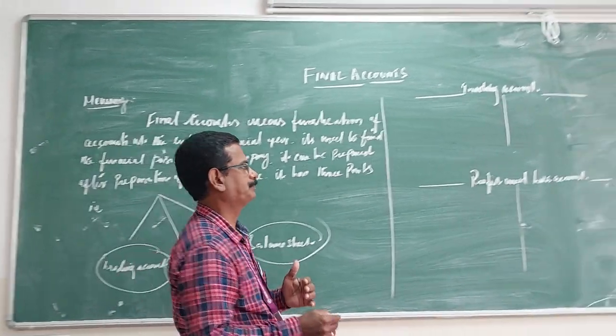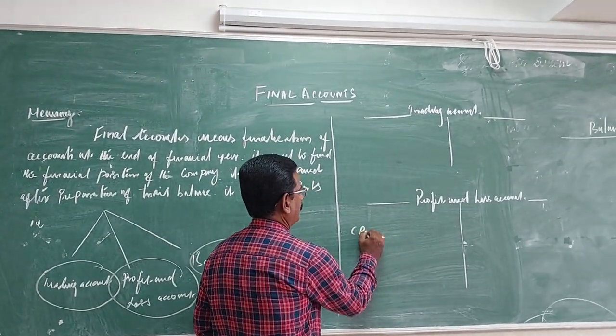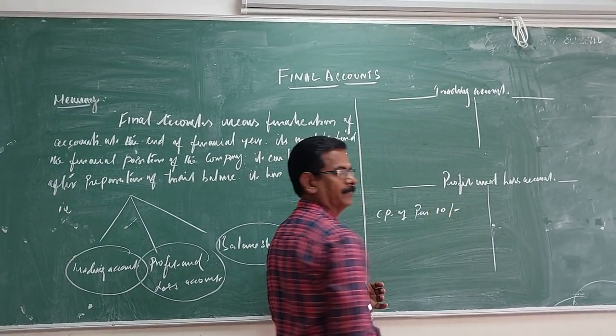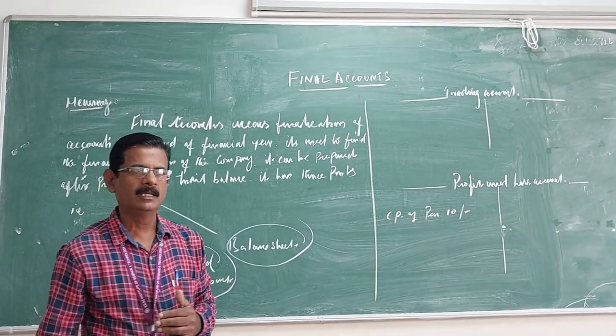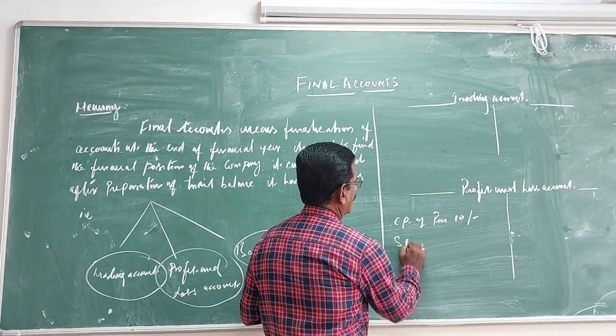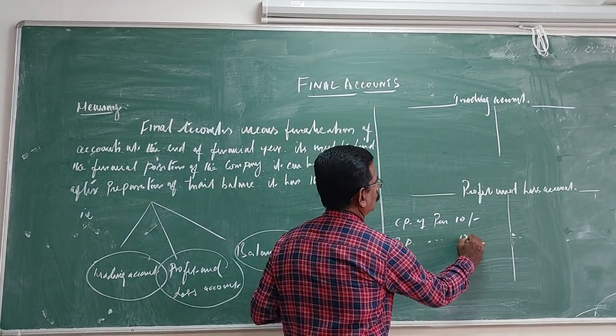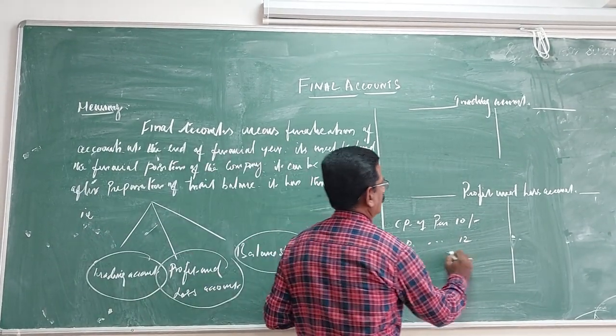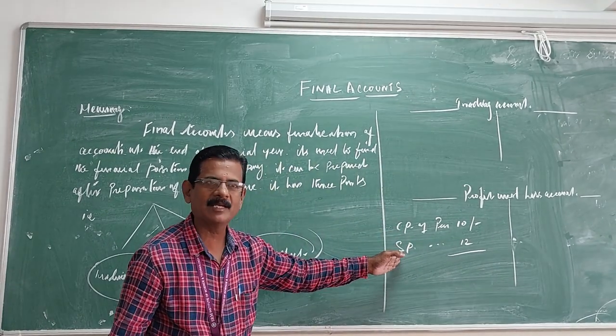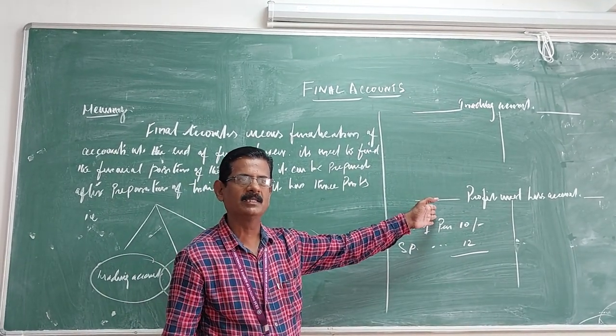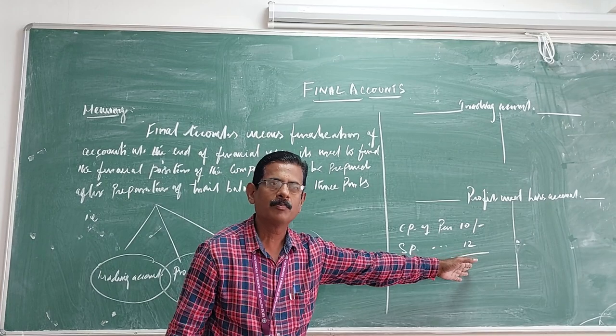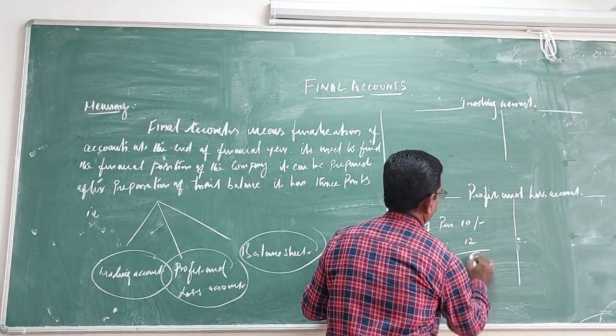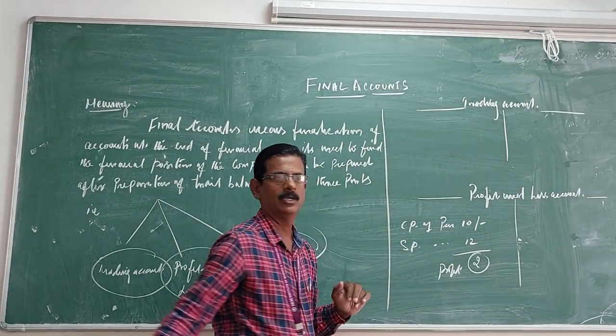For example, the cost price of the pen is 10, the selling price of the pen is 12. So the excess of selling price over the cost price will give profit. How much? Two.